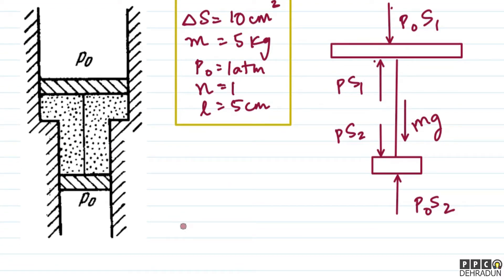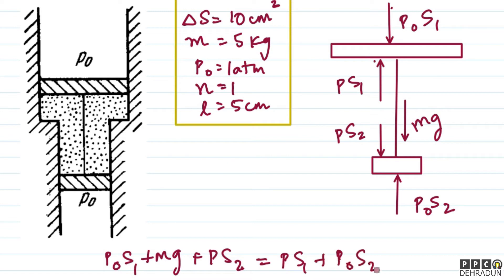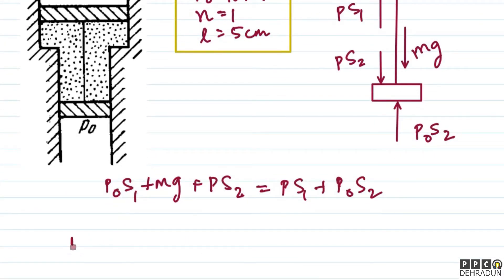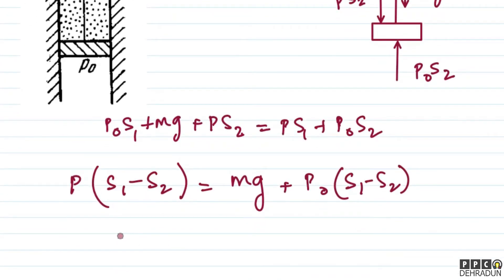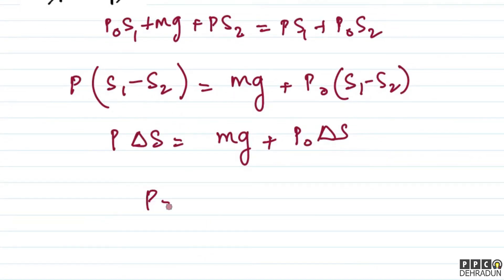Writing the equilibrium equation — downward forces: P₀·S₁ + Mg + P·S₂, balanced by upward forces: P·S₁ + P₀·S₂. Rearranging, P multiplied by (S₁ - S₂) equals Mg plus P₀ multiplied by (S₁ - S₂). Since S₁ - S₂ = ΔS as given in the problem, we get P·ΔS = Mg + P₀·ΔS, so P = Mg/ΔS + P₀.